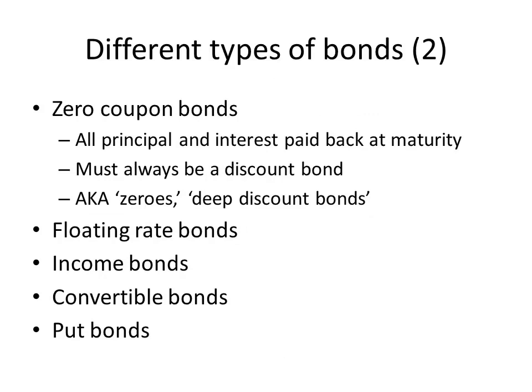Now, a different type of bond: zero-coupon bonds. These bonds don't pay any coupons through their entire lives — all the principal and interest is paid back at maturity. They always have to be discount bonds because their coupon rate is always zero and the required return by investors will always be positive. They're also known as zeros or deep discount bonds — the only way you make money on them is through the capital gain between what you pay and the face value.